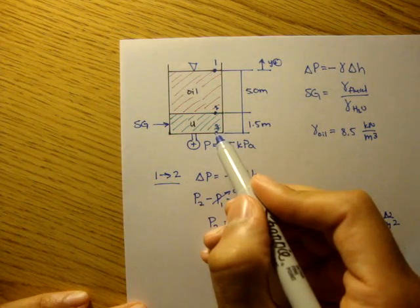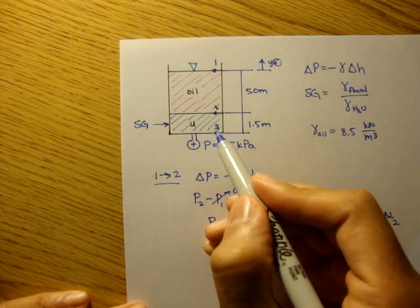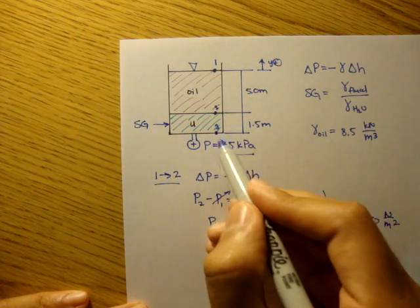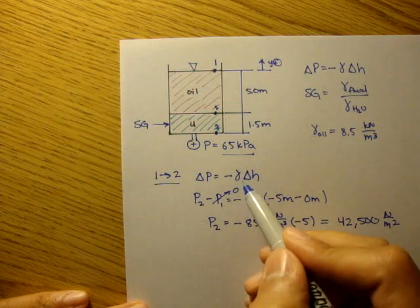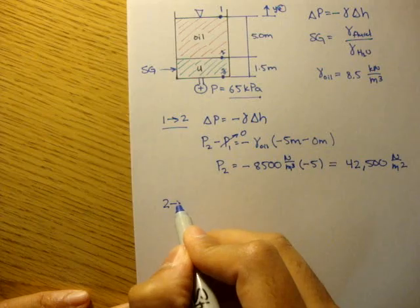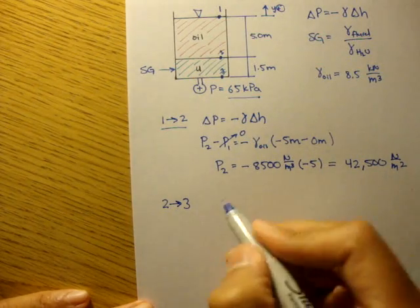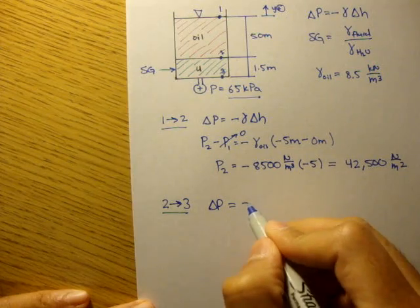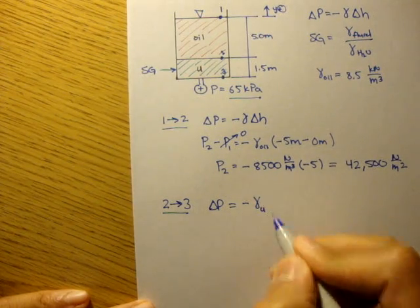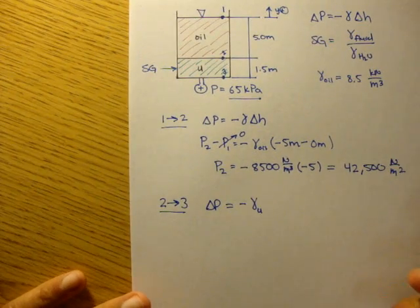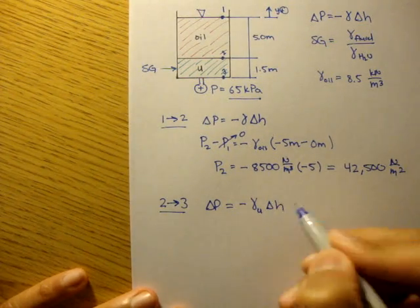Now let's use the pressure—we know the pressure at two, we know the pressure at three. Let's use that to find the gamma of this unknown liquid. Let's do another analysis from two to three. The change in pressure equals negative gamma sub u, our unknown gamma, times the change in height.